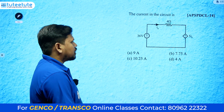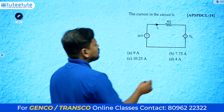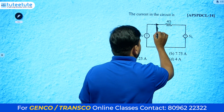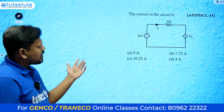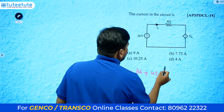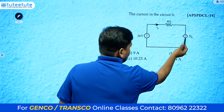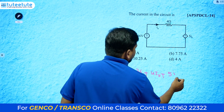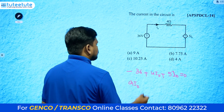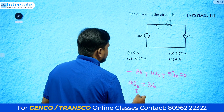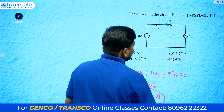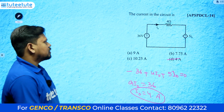The final question asks for the current i_naught in a simple loop circuit with a 36-volt source, a 4-ohm resistor, and a dependent voltage source 5*i_naught. Writing KVL: minus 36 + 4*i_naught + 5*i_naught = 0, giving 9*i_naught = 36, so i_naught equals 4 amperes.